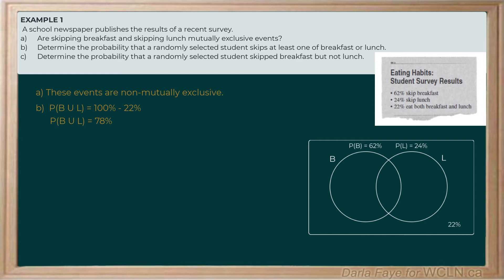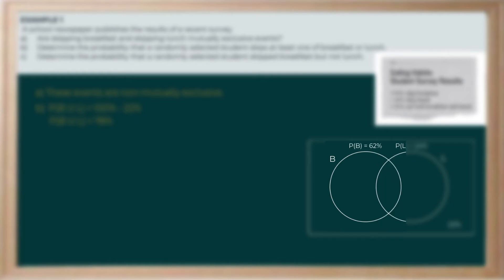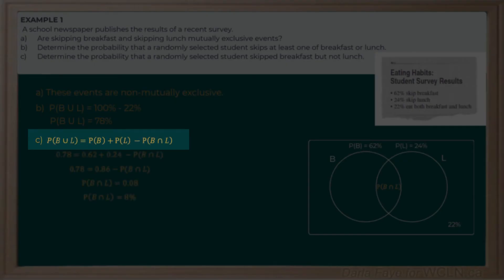Part C is asking us to determine the probability of a student skipping breakfast but not lunch — that is this area on our Venn diagram where they only skip breakfast. We know the total probability of a student skipping breakfast, but we don't know the probability of the intersection — the probability that they skipped both breakfast and lunch. So we can use our equation to help us figure out this intersection.